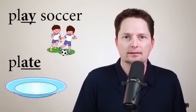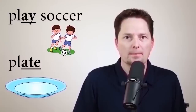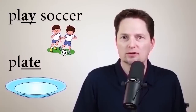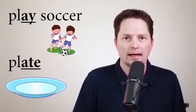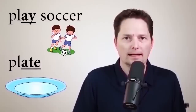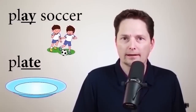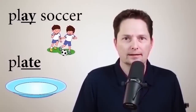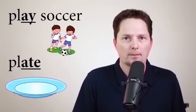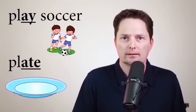When you have a stop T at the end, it makes the vowel shorter. Let's compare: 'play' has no stop T so the vowel is longer — play. Compared with 'plate' — the stop T makes the vowel shorter. They share the same long A vowel, but the stop T at the end makes it a little shorter. Play versus plate.